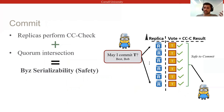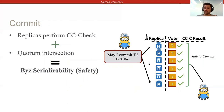This is safe since quorum intersection ensures that no two conflicting transactions could both receive enough votes to commit. In the example on the slide, we have six replicas who all vote to commit, which more than fulfills this quorum intersection argument.